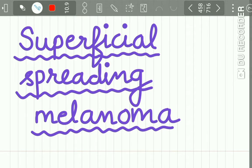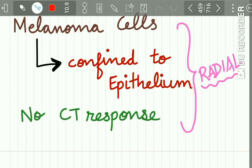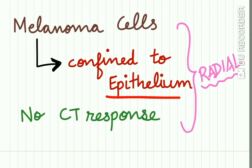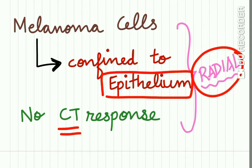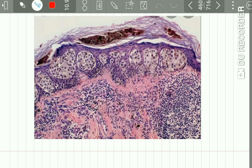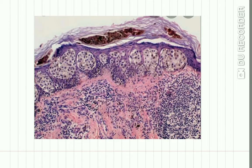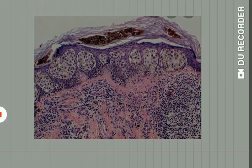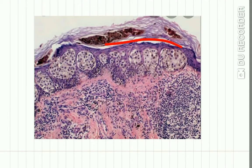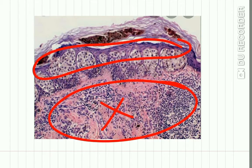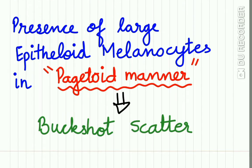In superficial spreading melanoma, the melanoma cells are confined only to the epithelium. There is no connective tissue response and growth is totally in the radial phase. Here you can see the melanoma cells present only in the epidermis with no connective tissue response. A characteristic and important feature of superficial spreading melanoma is the presence of large epithelioid melanocytes.